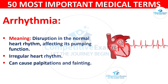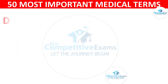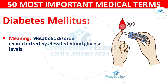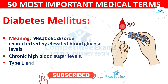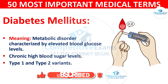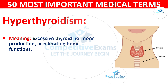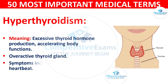Diabetes mellitus: meaning a metabolic disorder characterized by elevated blood glucose levels. It is chronic high blood sugar, with type 1 and type 2 variants. Hyperthyroidism: meaning excessive thyroid hormone production accelerating body functions. It is an overactive thyroid gland.